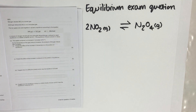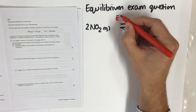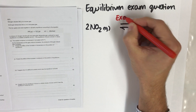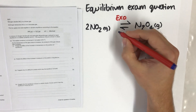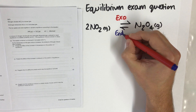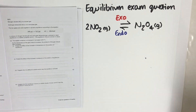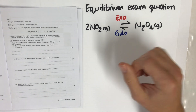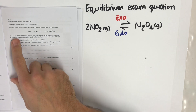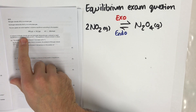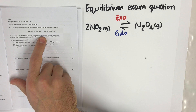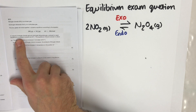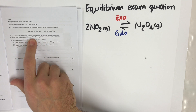That means the forward reaction is exothermic — we've got a negative sign for the forward reaction. The backwards reaction must therefore be endothermic, the opposite. In the question, a mixture of the nitrogen dioxide gas and dinitrogen tetraoxide gas is allowed to reach equilibrium in a sealed container at 20 degrees Celsius.